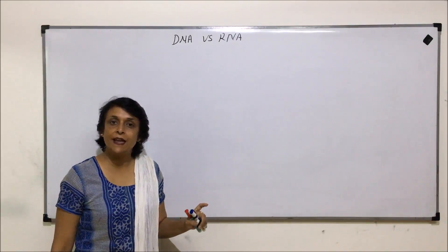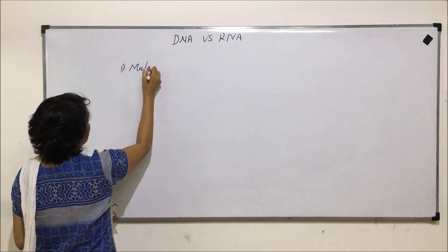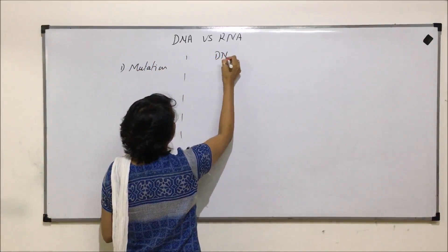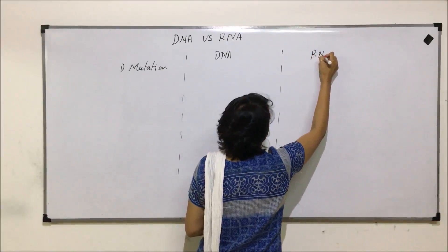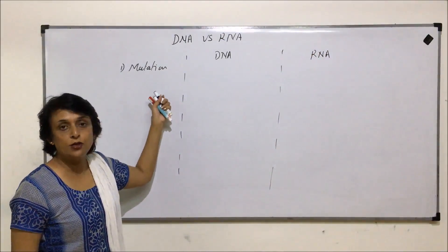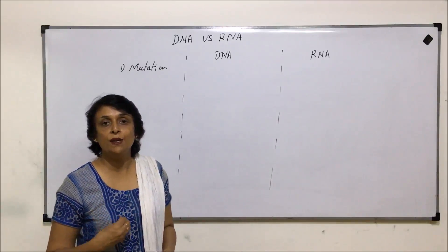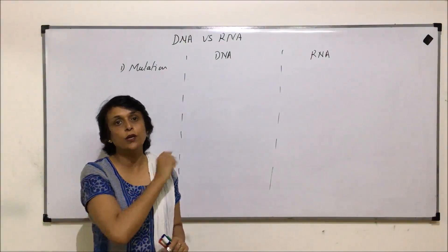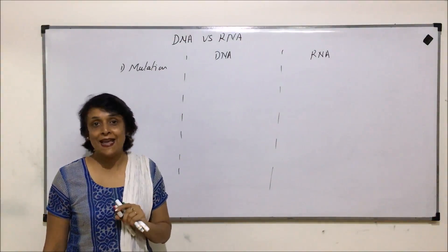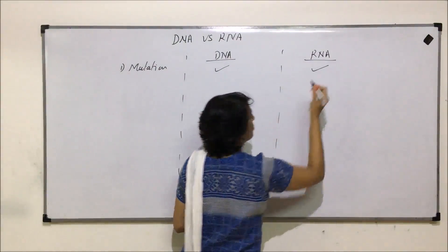The first point on which we want to compare DNA and RNA is mutation. We divide the comparison with DNA in one segment and RNA in another. When we discussed the properties a molecule must have to be termed genetic material, mutation was one of them — mutations should be stable and inheritable. Both DNA and RNA undergo mutation, so here both are at the same level.